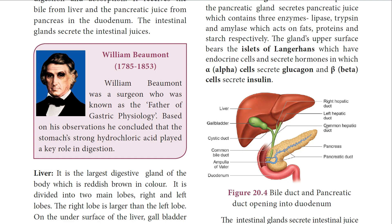The pancreas is a lobed, leaf-like gland situated between the stomach and the duodenum. Its exocrine part secretes pancreatic juice containing three enzymes: lipase, trypsin, and amylase, which act on fat, protein, and starch respectively. The endocrine part has islets of Langerhans with two types of cells — alpha cells that secrete glucagon and beta cells that secrete insulin. The intestinal gland secretion is called succus entericus and contains enzymes like maltase, lactase, sucrase, and lipase, all acting in an alkaline medium.